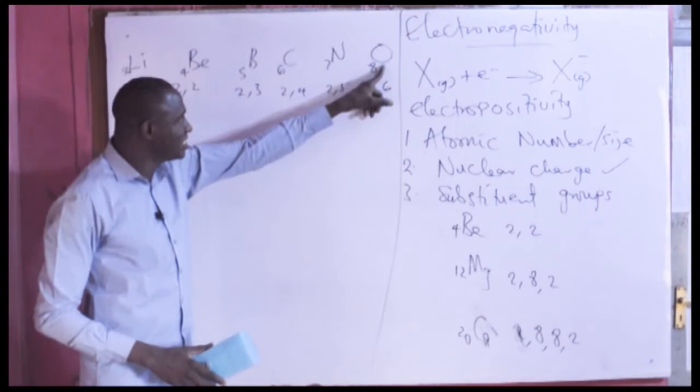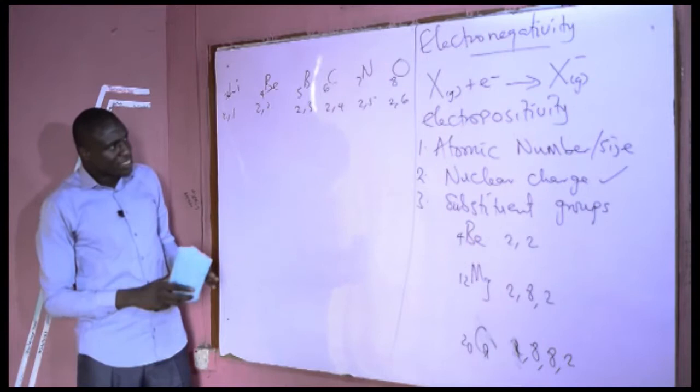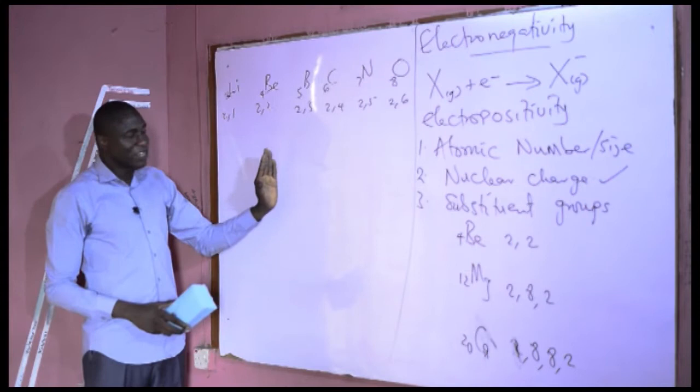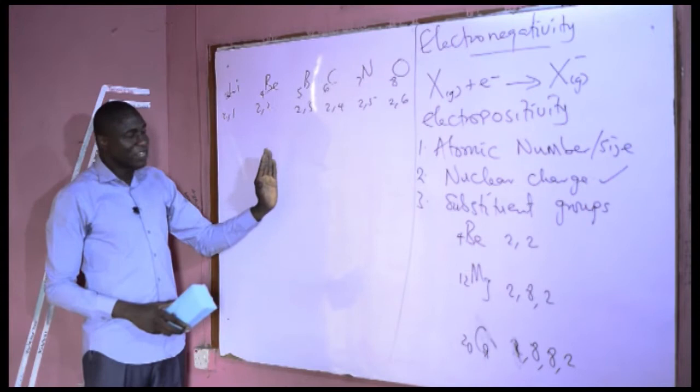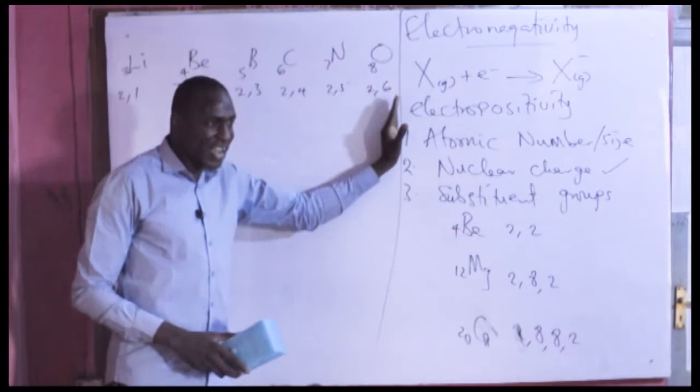That is why electronegativity tends to increase from left to right across the period. The higher the nuclear charge, the higher the electronegativity value. Therefore, oxygen has a higher electronegativity than nitrogen, which is higher than boron. In terms of electropositivity, the reverse is the case — the most electropositive element is on the left, and the least electropositive is on the right.